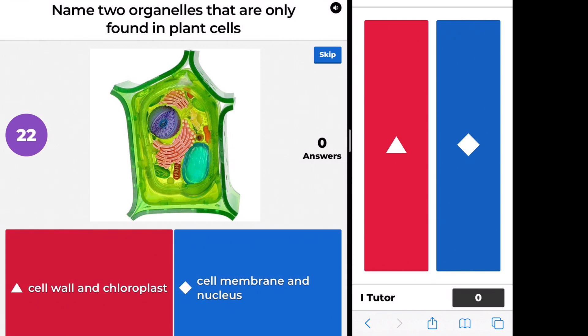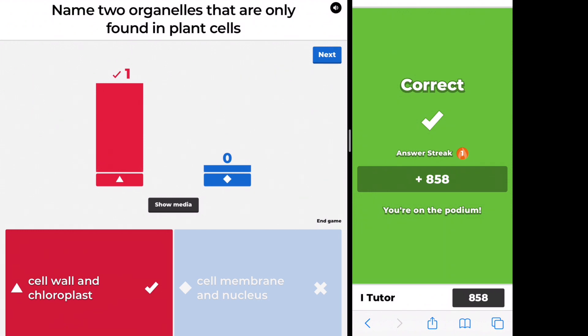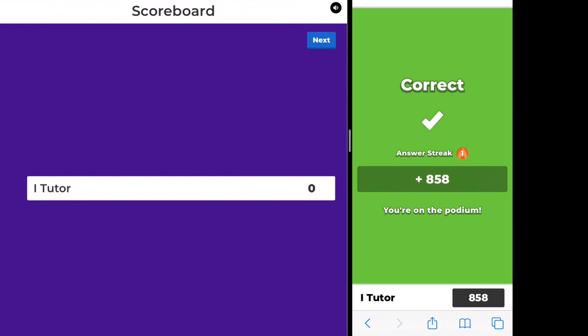In this example, a teacher has logged into Kahoot! and is sharing their screen in Zoom on the left hand side. And on the right hand side is the split screen where the students have logged into Kahoot.it to get the answer panel.